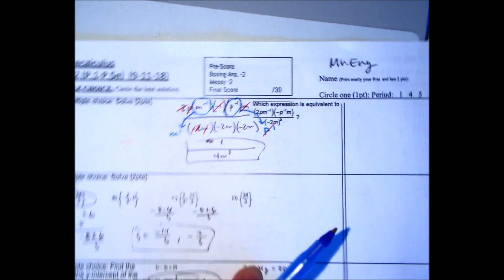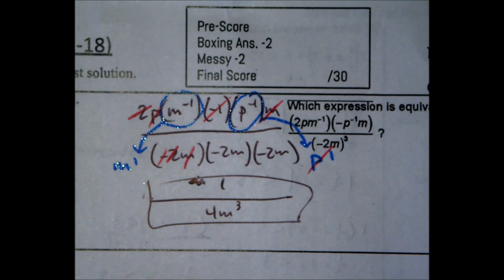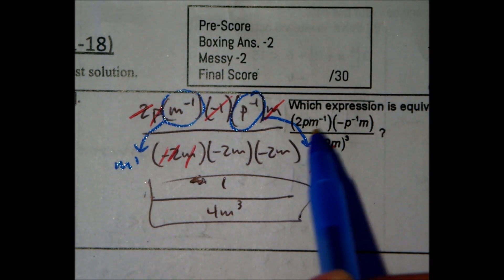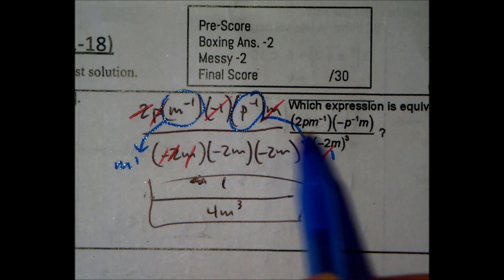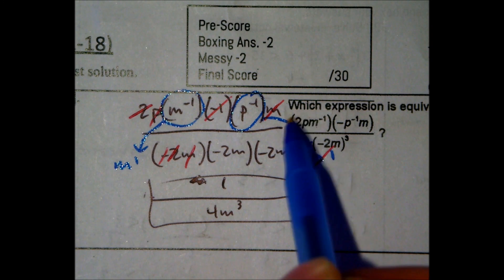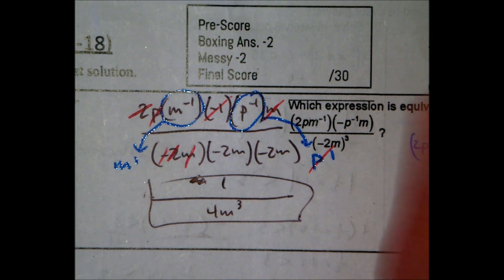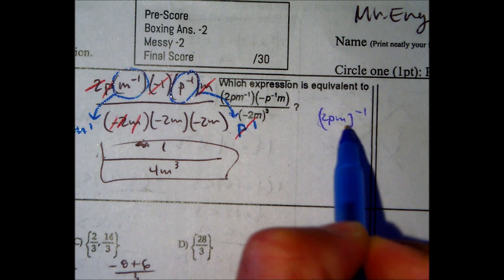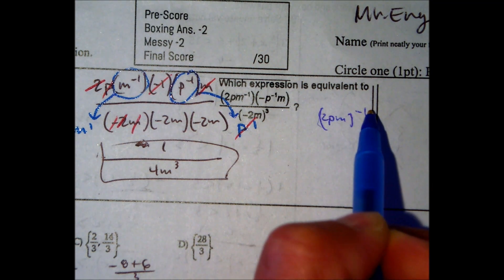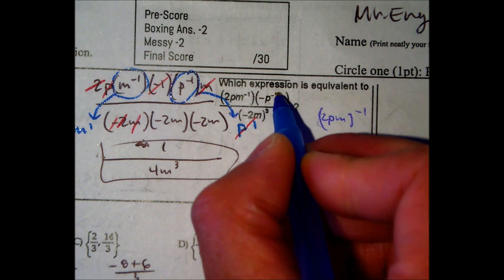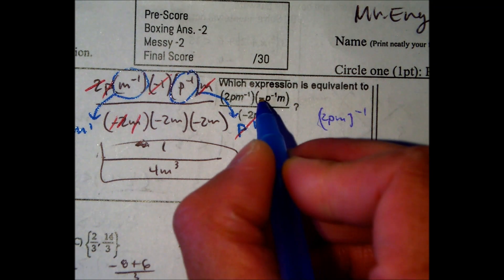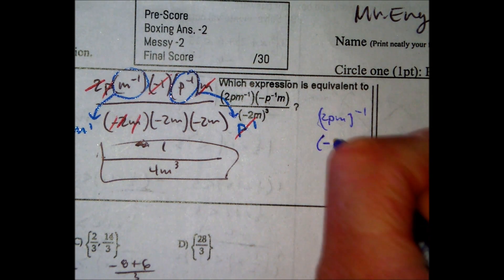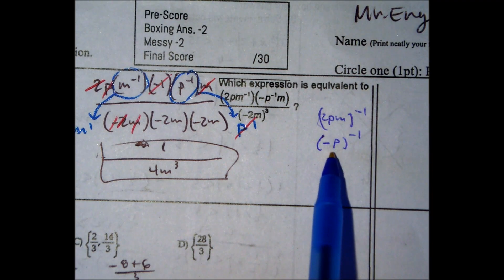Question number one was an exponents problem. The common mistake is to think that the negative one is associated with the whole expression. If they wanted the whole expression to be to the negative one power, it would have been two P M to the negative one. If they wanted this whole expression to have a negative one exponent, they would have put parentheses on all of this. Another common mistake here is the P. This P has a negative exponent, but it does not include the negative sign in front of it. If they wanted the negative sign to be included with it, they would have done something like this.